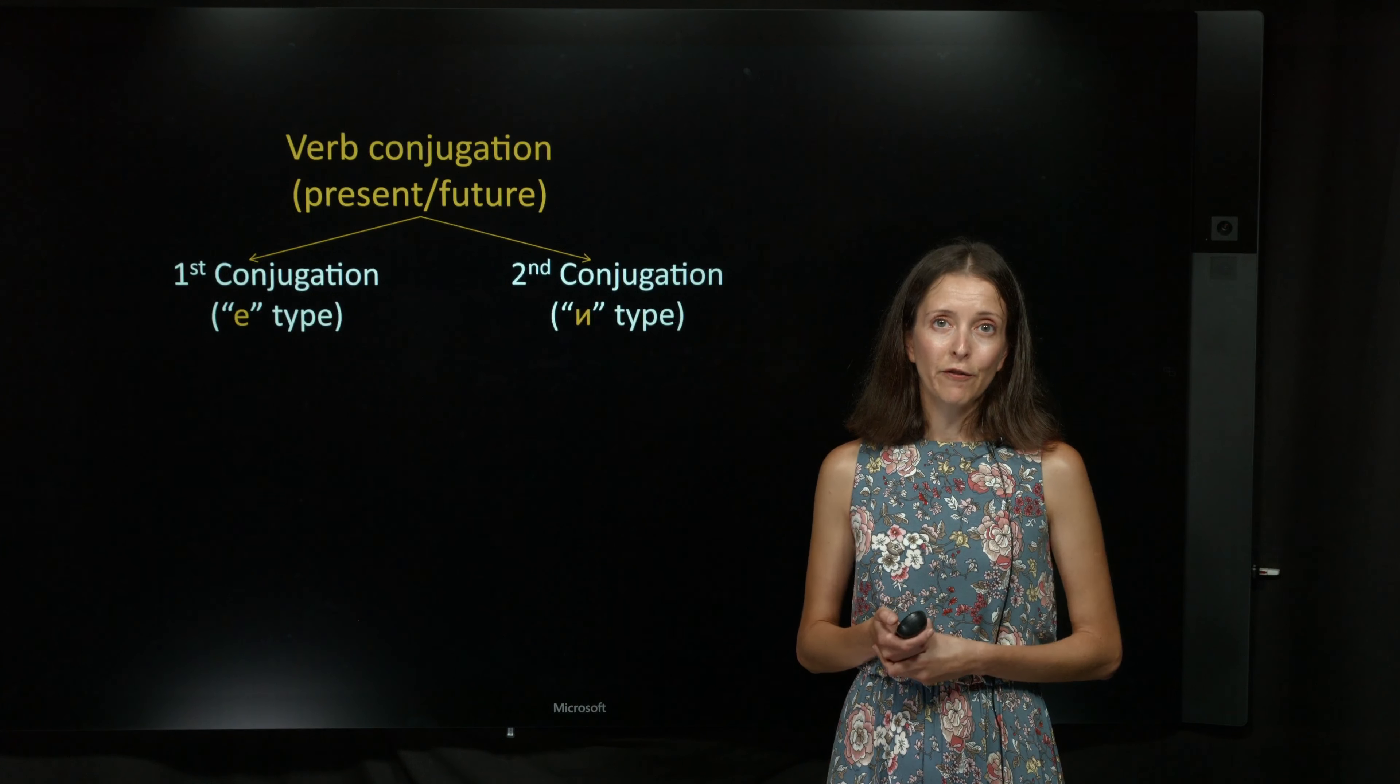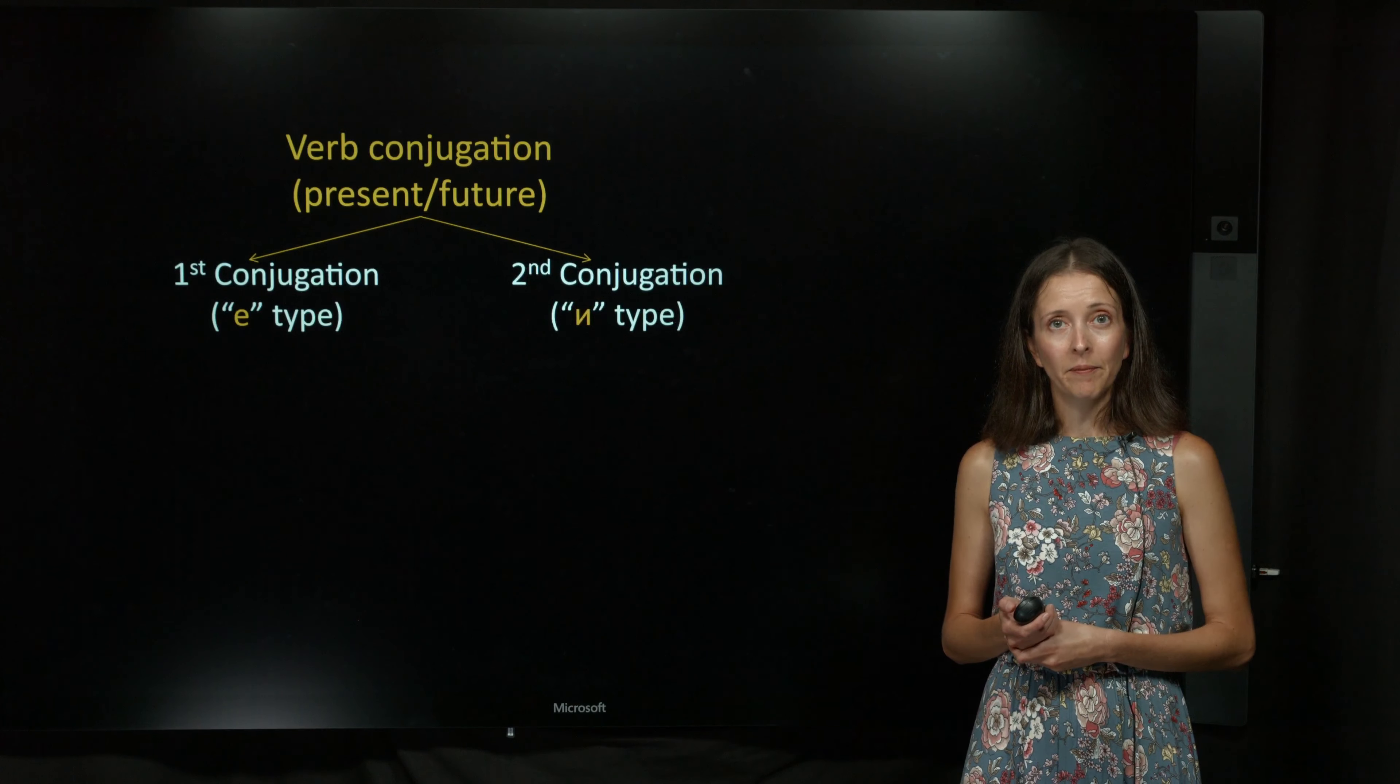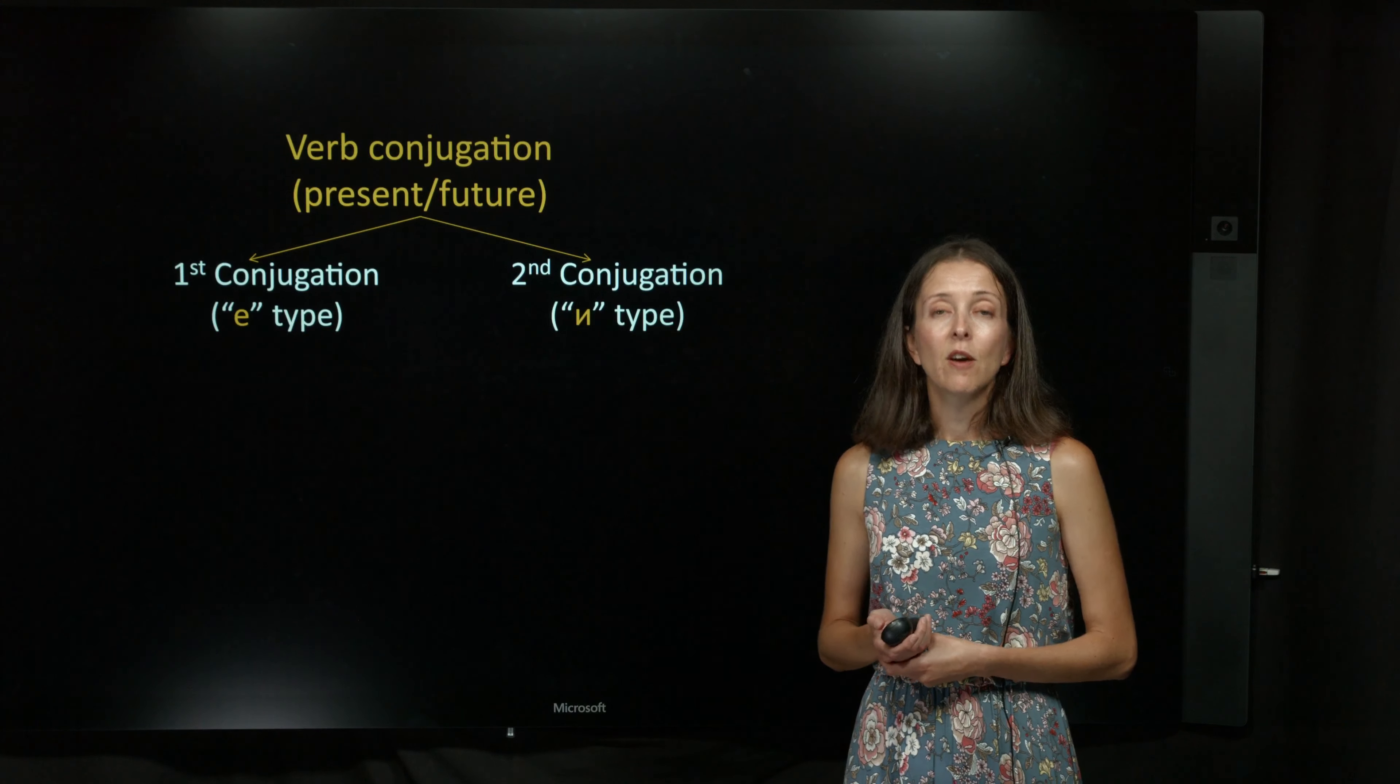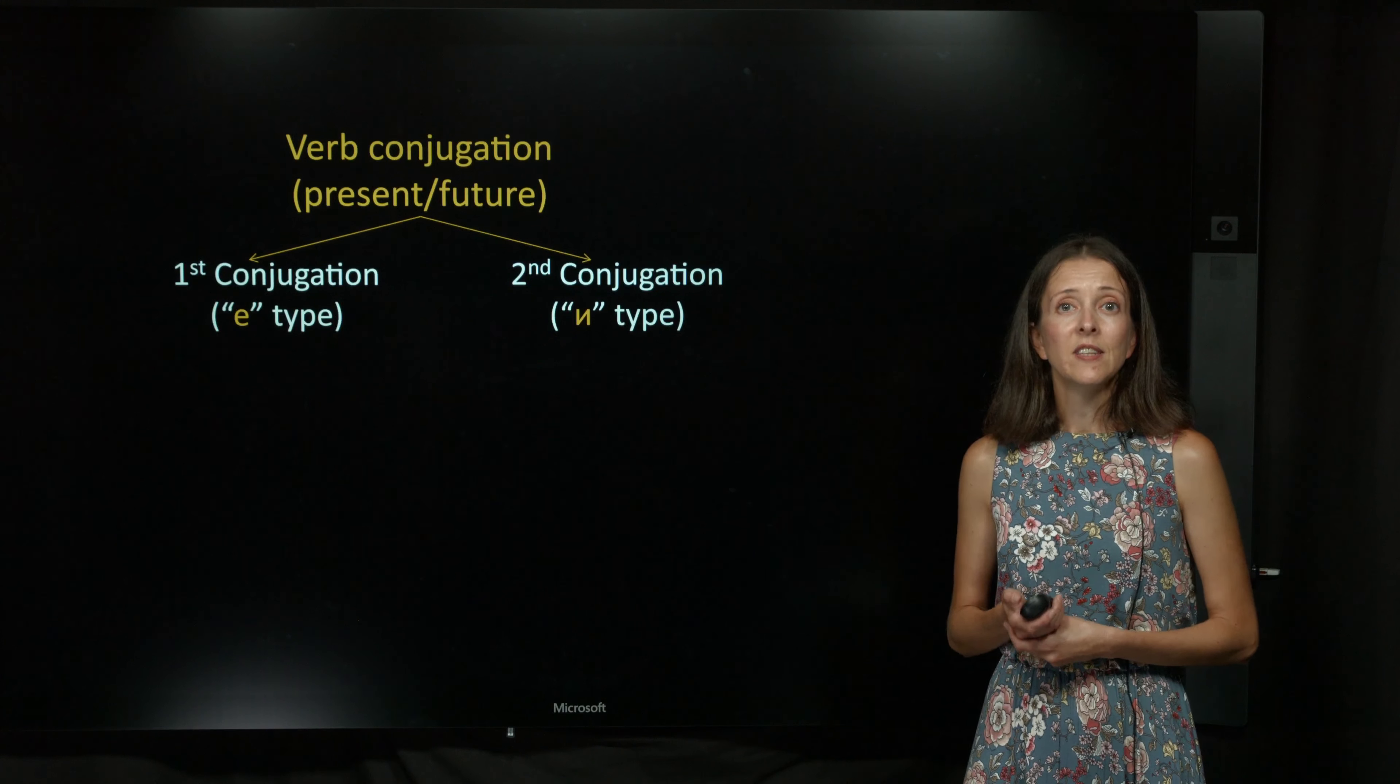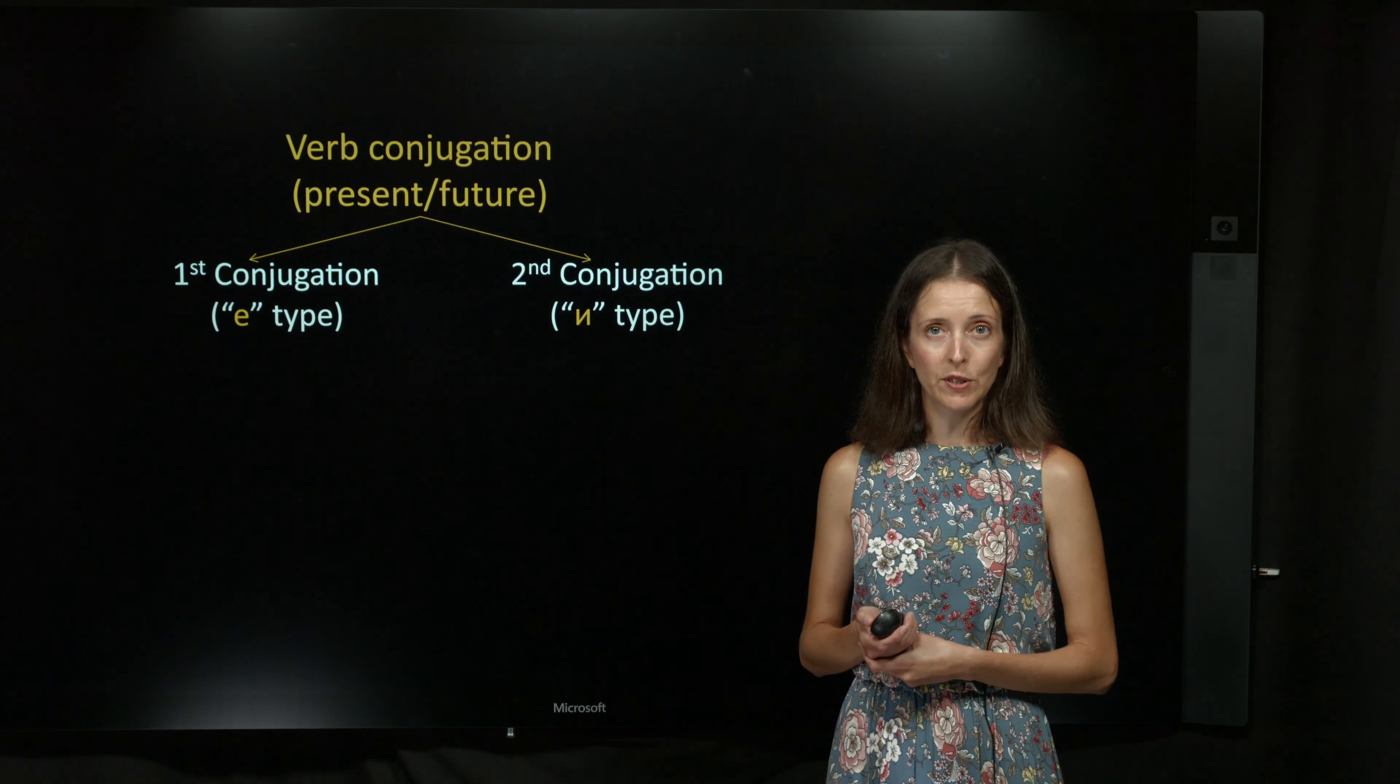By conjugating a verb, we mean changing its ending based on person and number. When we conjugate imperfective verbs, we form the present tense. When we conjugate perfective verbs, we form the future tense, since perfective verbs are not used in the present. And that is why the stem we use to conjugate a verb is often called the present-future stem.